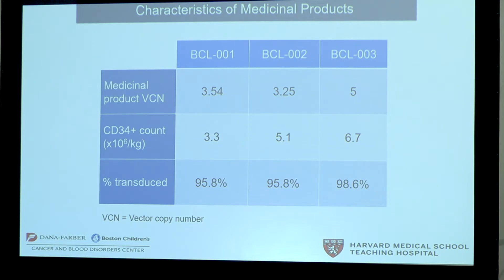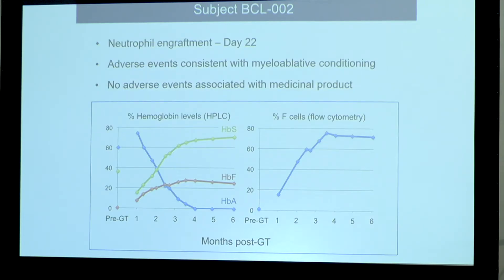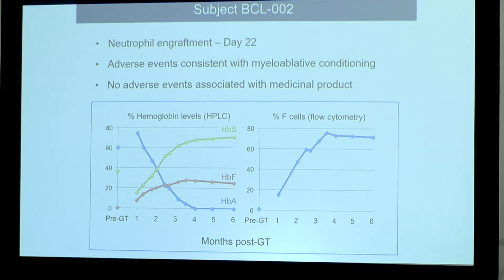Subject BCL002, whose product is described in the middle column, was infused in May 2018. The autologous transplant course for this patient was uncomplicated. Neutrophil engraftment occurred on day 22. Adverse events were all consistent with myeloablative conditioning, and no adverse events were associated with the medicinal product. On the left shows types of hemoglobin over time in this subject. The blue line is hemoglobin A, or normal adult hemoglobin, which initially was high because of prior transfused blood and decreased to 0% by four months after gene transfer. Hemoglobin F, depicted in the red line, rose substantially after gene therapy and has remained in the 25% to 28% range since month three after gene therapy.